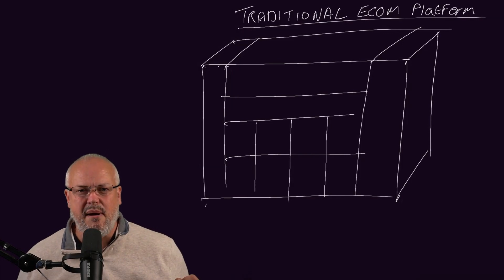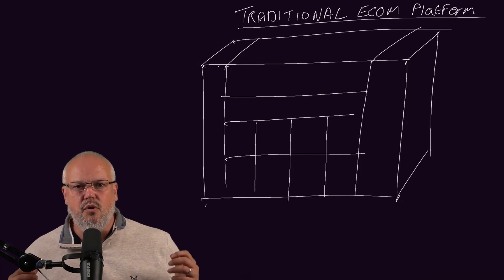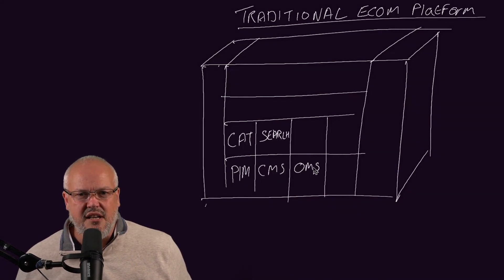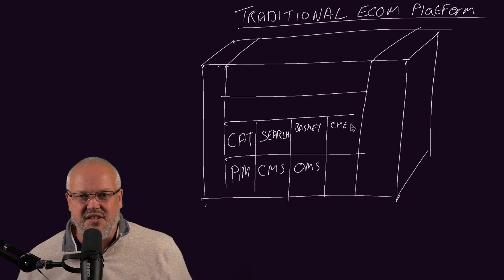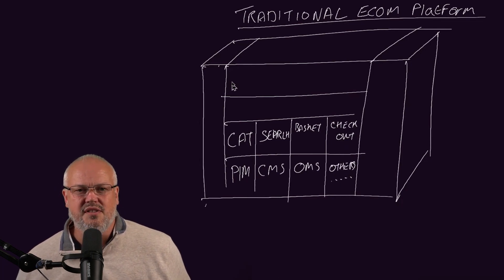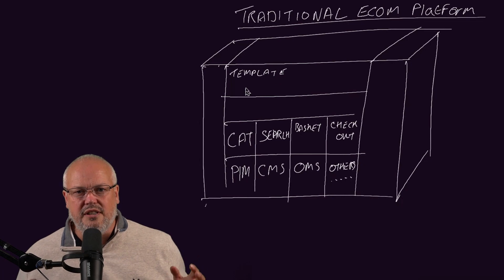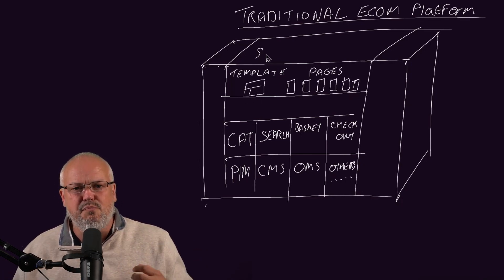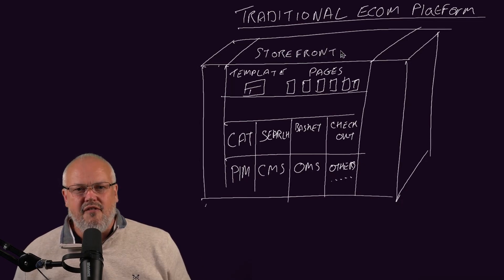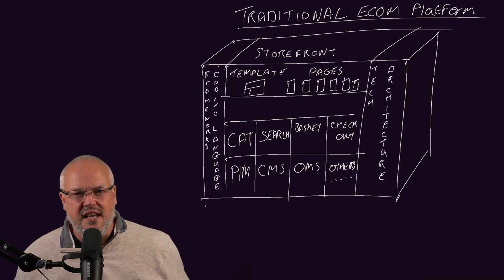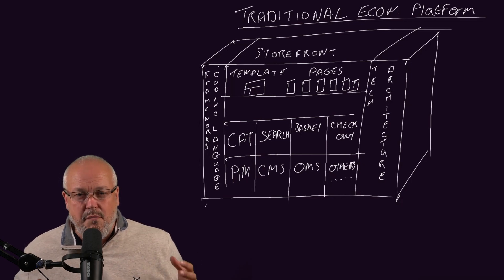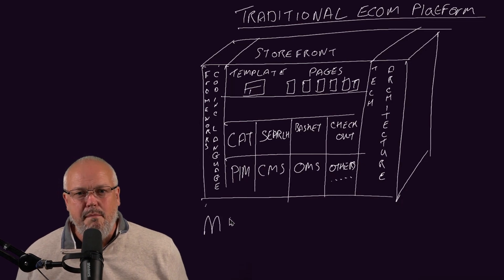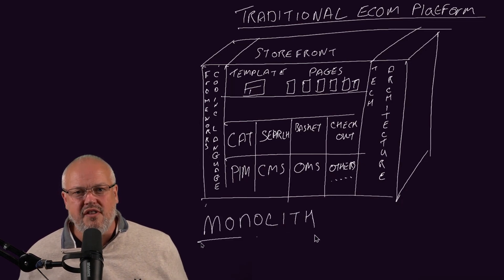Traditional e-commerce was really a package suite of applications all in one box. You had your PIM, your catalog, search, CMS, order management, basket, checkout process — everything to do with e-commerce was all in one box. You'd use templates and pages to create your storefront, so the UX was pretty much predefined. All of the technology, architecture, languages, and frameworks were often predefined by the e-commerce suite. This is why it was called a monolith — mono meaning one — all in one place.